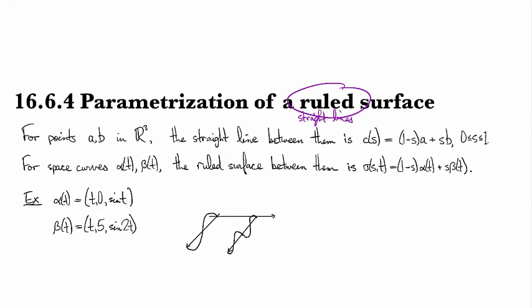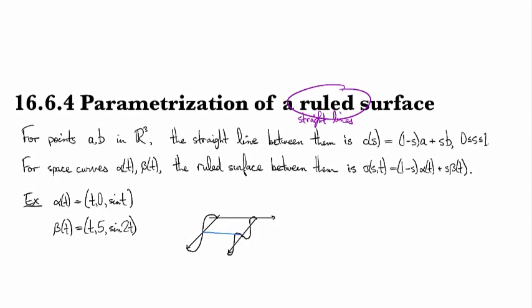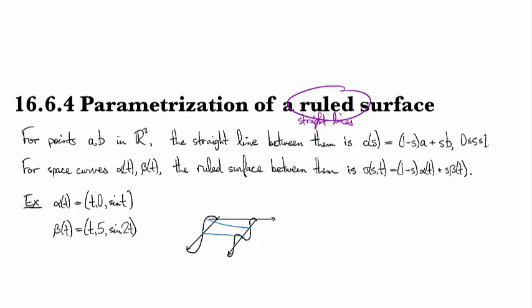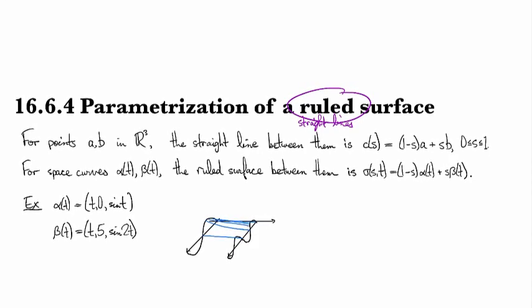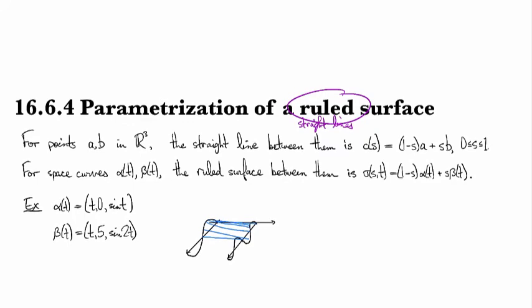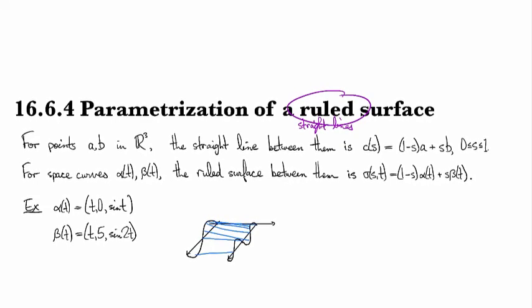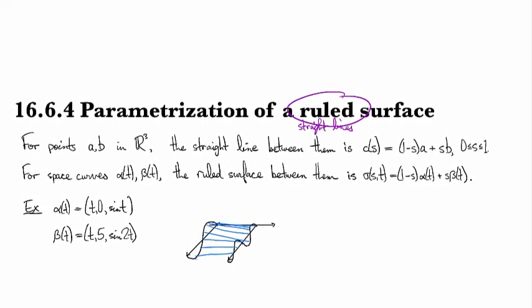And then what it's going to do is connect between these and just interpolate with straight lines, because that's what the straight line path does. It just interpolates between these.